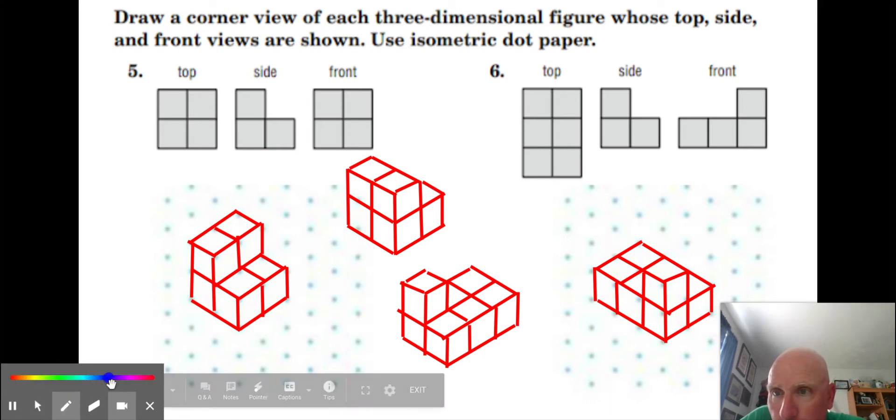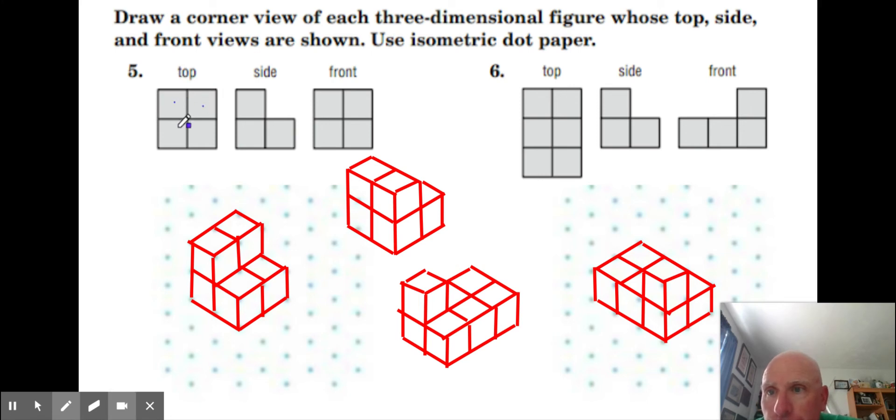At the top we're going to see four blocks. So when we look at this right here, we see that top, that top, that top, and that top, because again we don't see depth. Now when we see the side here, we see an L shape.